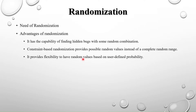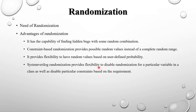Third, randomization provides flexibility to have random values based on user-defined probability — we can control how many times a particular value should occur. Fourth, SystemVerilog randomization provides flexibility to disable randomization for a particular variable in a class, as well as disable particular constraints based on the requirement. If you don't want to randomize a particular value, you can disable it; similarly, you can disable specific constraints from multiple constraints in a class.